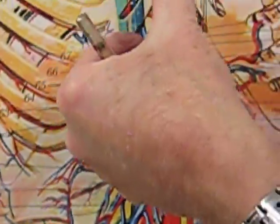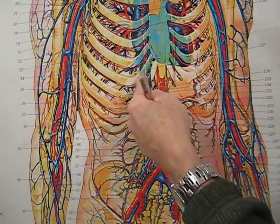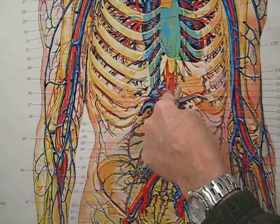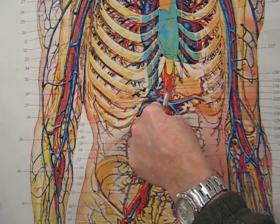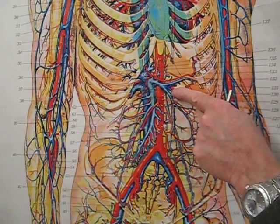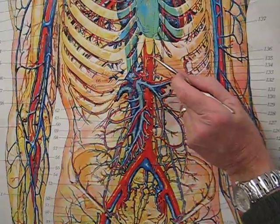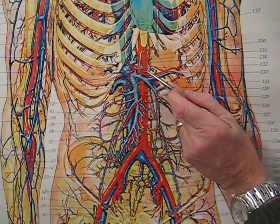Thinking about the stomach for a minute, the stomach is kind of like a J-shaped organ. The right hand side of the stomach is concave, we call that the lesser curvature. The left side of the stomach is convex, that's the greater curvature. So the left gastric artery as it comes up is going to go into the lesser curvature like so.